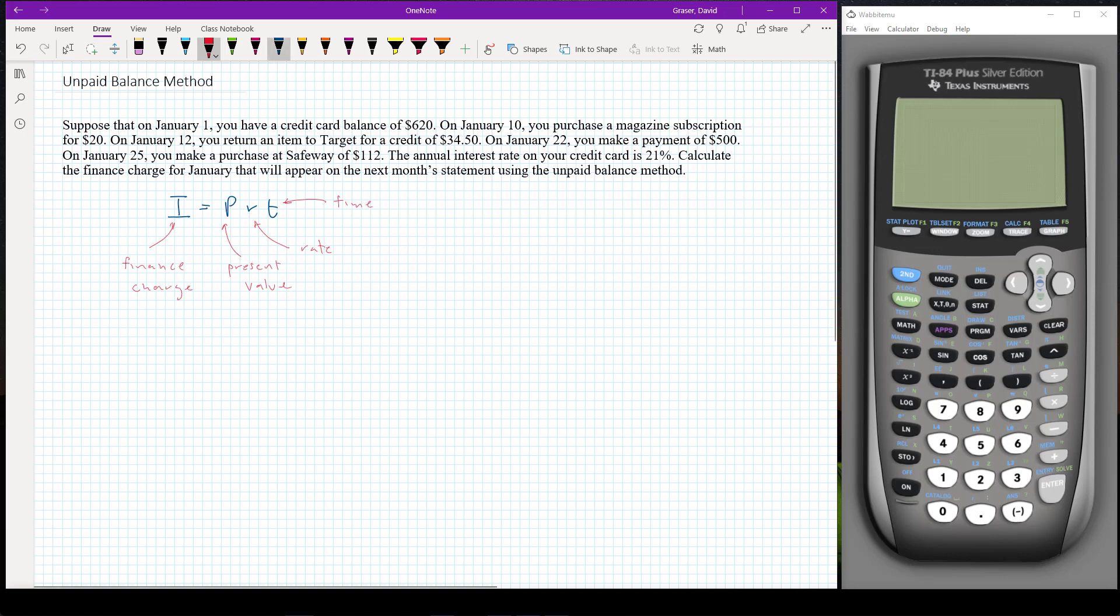So our present value, the amount that we have outstanding, is six hundred and twenty dollars. Our interest rate is twenty one percent, so zero point two one. And since this is an annual interest rate I need to do my time in terms of years. So I'm going to write it as one over twelve. So it's a twelfth of a year.